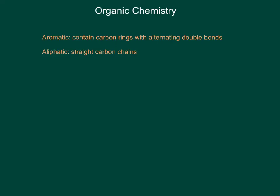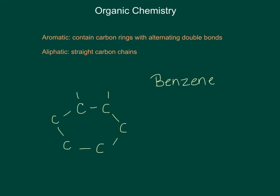An aromatic compound, on the other hand, contains carbon rings with alternating double bonds. The simplest aromatic is called benzene. Benzene looks like a ring of carbons with hydrogens attached and alternating double bonds. It is a carbon ring with alternating double bonds, and hydrogens fill up all the leftover bonds that carbon has — because remember, carbon can form four bonds.